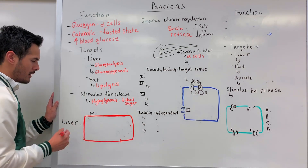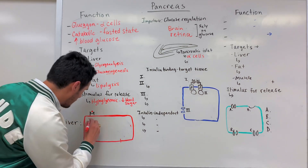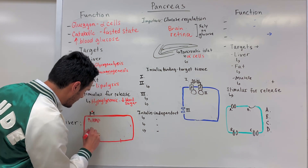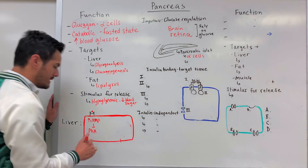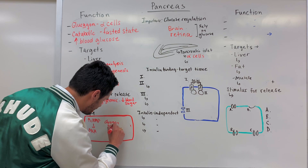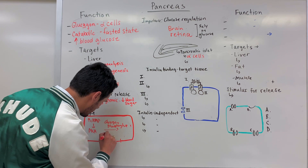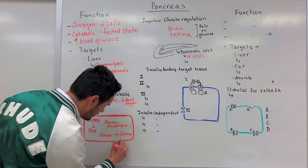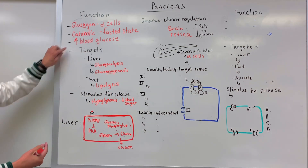Once glucagon gets to the target tissue — for instance, within the liver — we undergo a secondary messenger system. What's going to happen is we'll have an increase in the levels of cyclic AMP. From there we activate protein kinase A, which phosphorylates or activates glycogen phosphorylase and converts glycogen into glucose. That glucose then gets released into the blood, increasing our blood glucose levels.